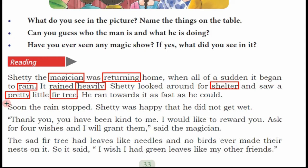Soon the rain stopped — aur jaldi hi varsha tham gayi. Setti was happy that he did not get wet — Setti khush tha kyunki wah bhiga nahi tha. Wet matlab geela hona ya bheeg jaana. Thank you, you have been kind to me — dhanyavaad, tumne mujh par daya dikhai. I would like to reward you — aur main tumhe puruskar dena chahta hoon. Reward ka matlab hai puruskar ya inaam. Ask for four wishes and I will grant them — tum chaar vardan maango aur main tumhe ye ichhaen punga, said the magician.